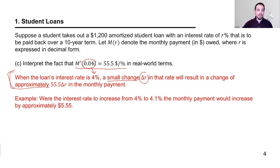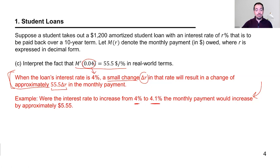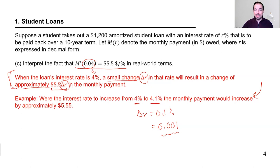Here's a concrete example: suppose you delay taking the loan a few days and rates rise to 4.1%. Then delta R is 0.1%, or 0.001 in decimal form. Multiplying: 55.5 times 0.001 gives approximately 0.0555. So the monthly payment would increase by about $0.0555.